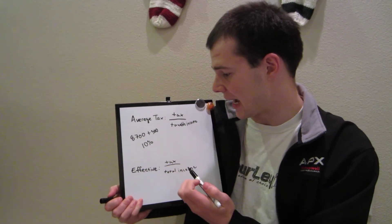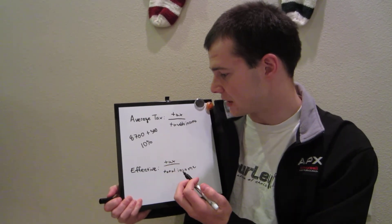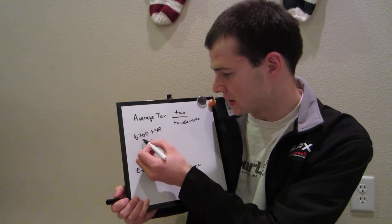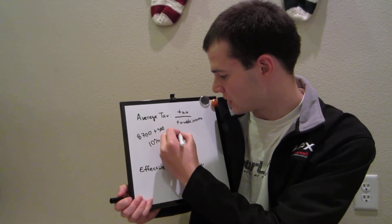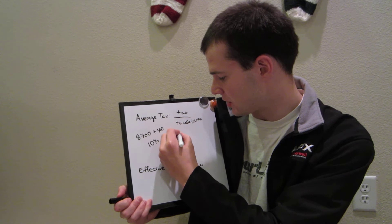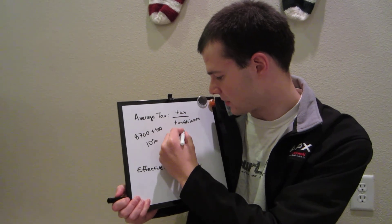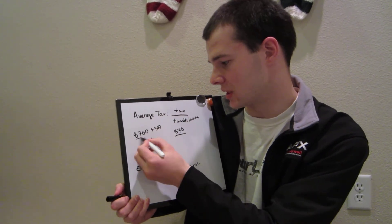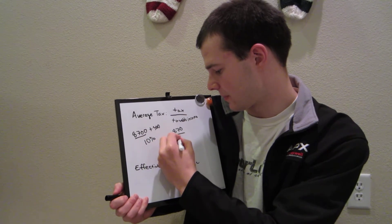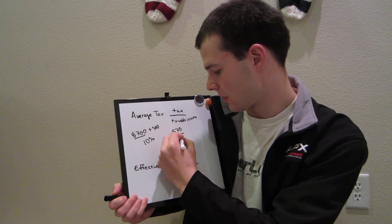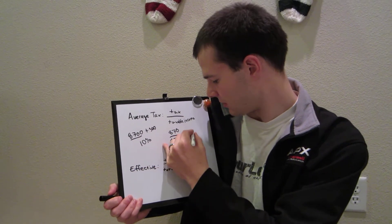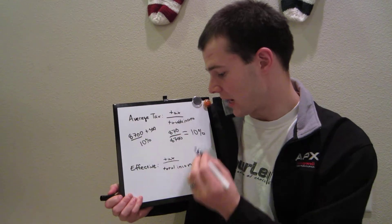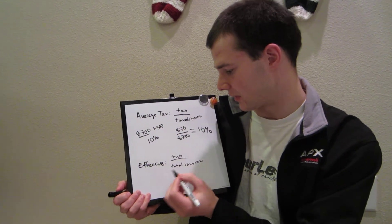My average tax is going to be my tax, which is 10% of $8,700 — so $870 — divided by my taxable income, which is $8,700. And that's going to be 10%.